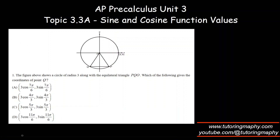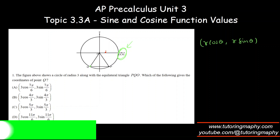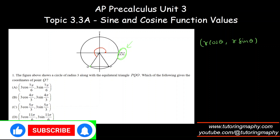This is similar to polar coordinates, which we'll officially cover later, but the concept is the same: the coordinates of a point are given by (r·cos θ, r·sin θ), where r is the radius — in this case just 3 — and θ is the angle made by the terminal ray OQ and the positive x-axis in the counterclockwise sense.